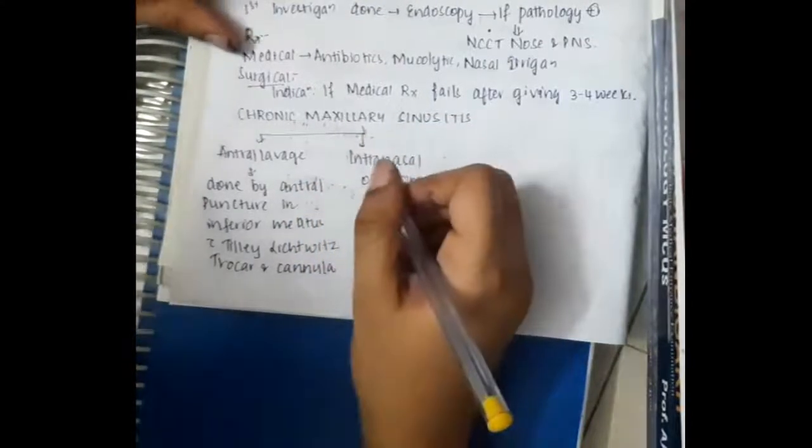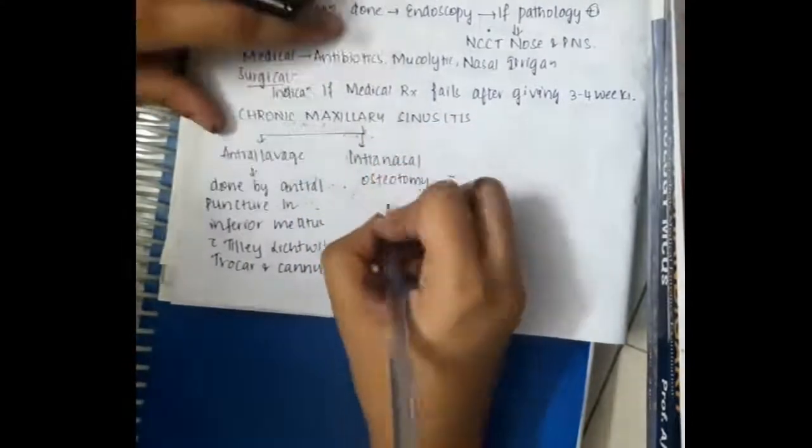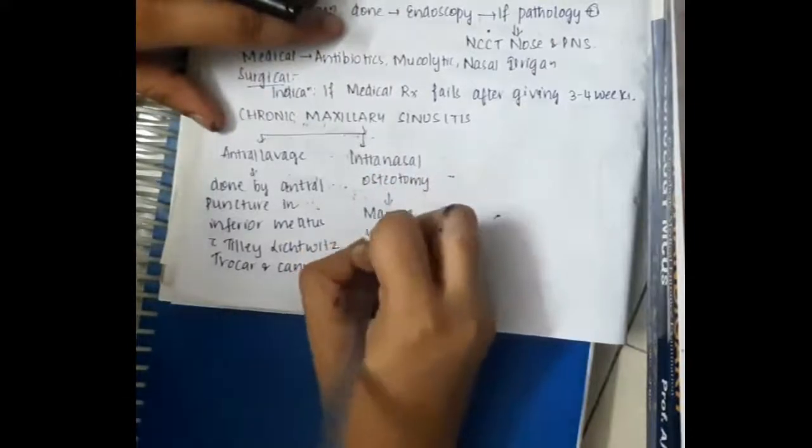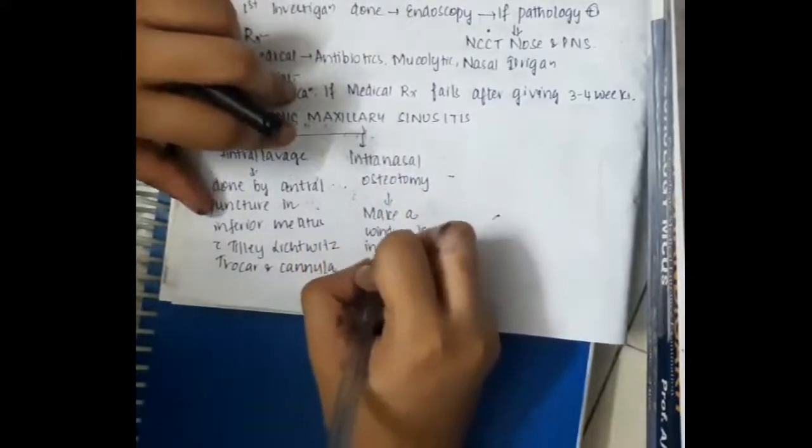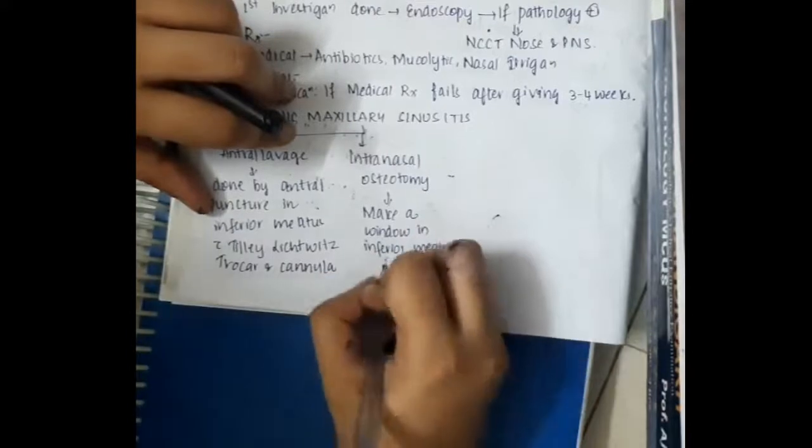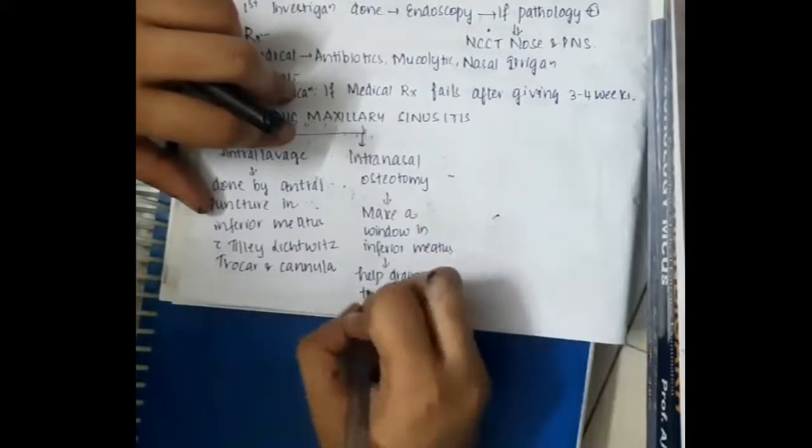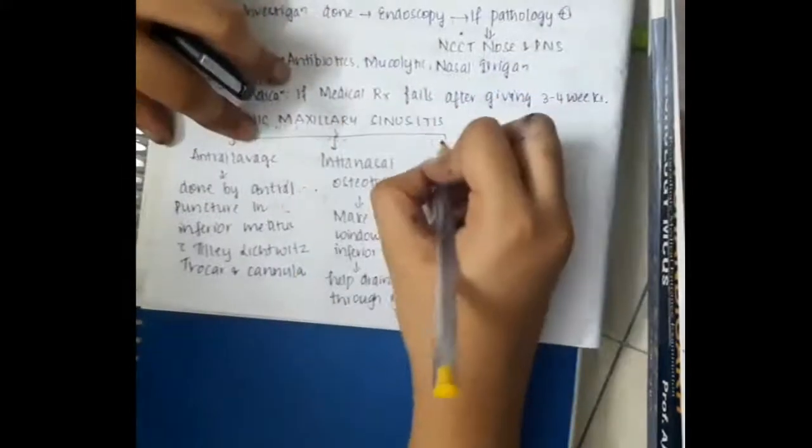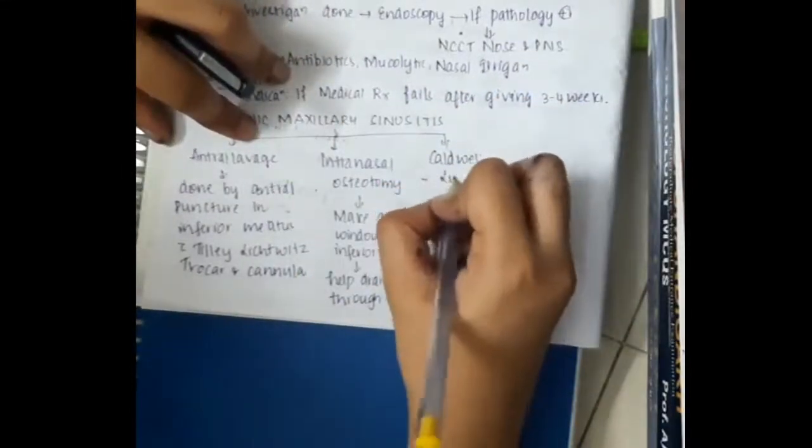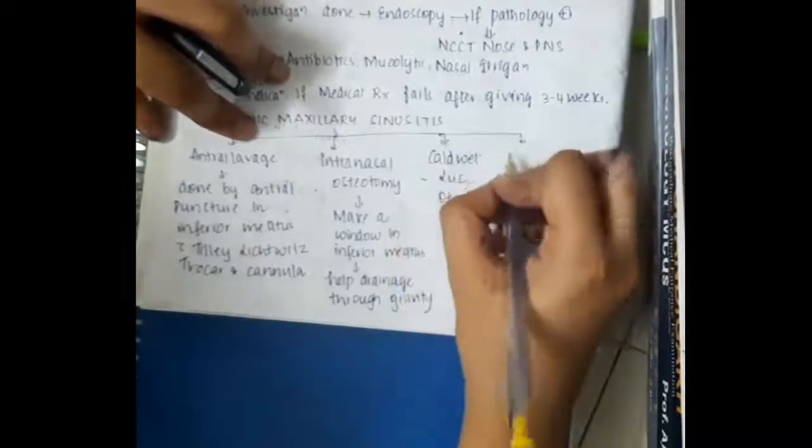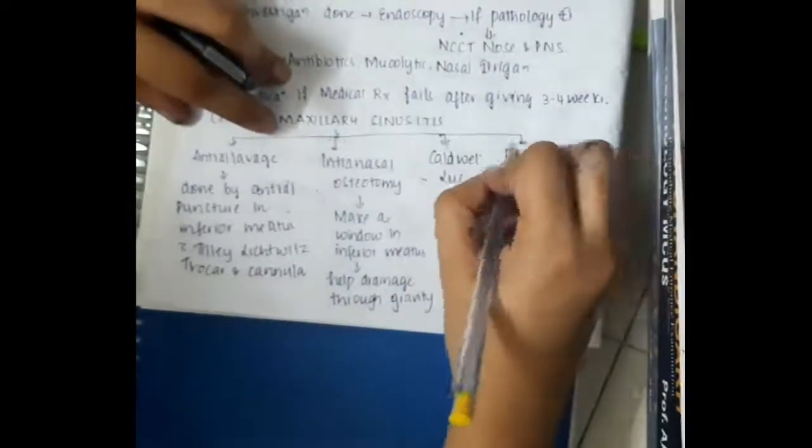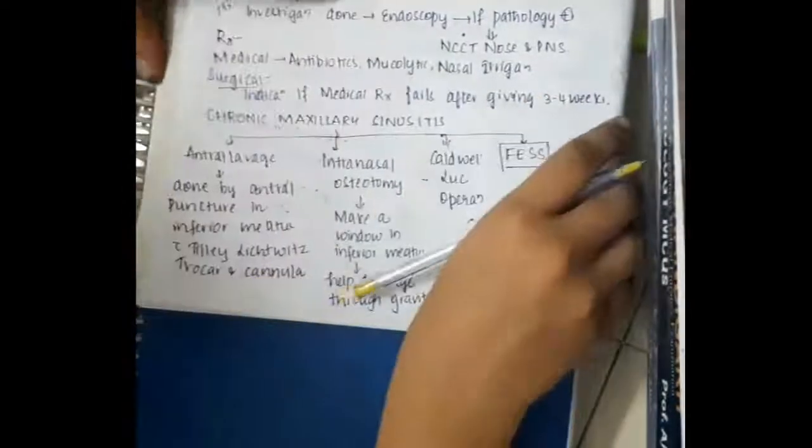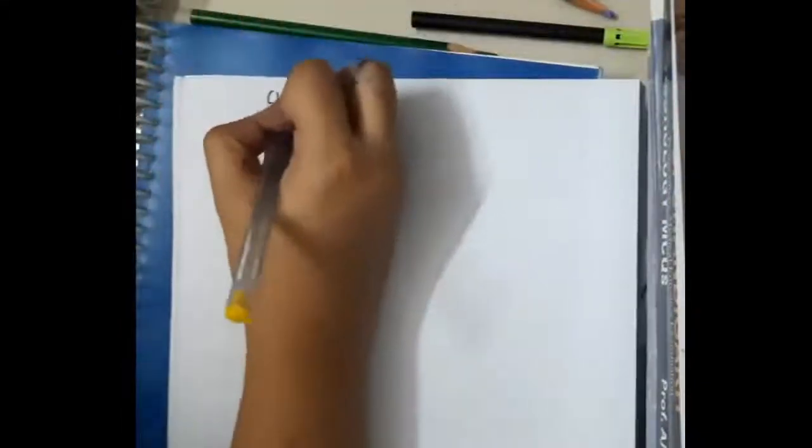Second, intranasal osteotomy is done. So in intranasal osteotomy, we will make a window in the inferior meatus and with the help of that window, we will allow the pus to be drained through gravity. Then we can do Caldwell-Luc operation. But the treatment of choice is functional endoscopic sinus surgery.